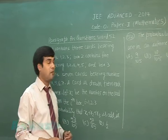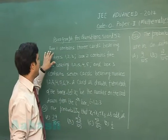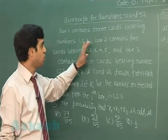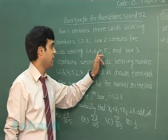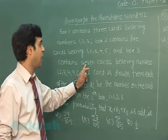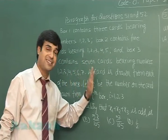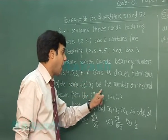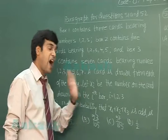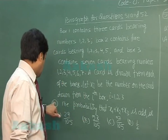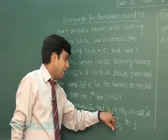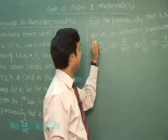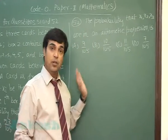The next section is about paragraph questions 51 and 52. Box 1 contains 3 cards bearing numbers 1, 2, 3. Box 2 contains 5 cards bearing numbers 1, 2, 3, 4, 5. Box 3 contains 7 cards bearing numbers 1, 2, 3, 4, 5, 6, 7. A card is drawn from each box. Let x_i be the number on the card drawn from the i-th box. Question 51: find the probability that x1 + x2 + x3 is odd. Question 52: find the probability that x1, x2, x3 are in AP.